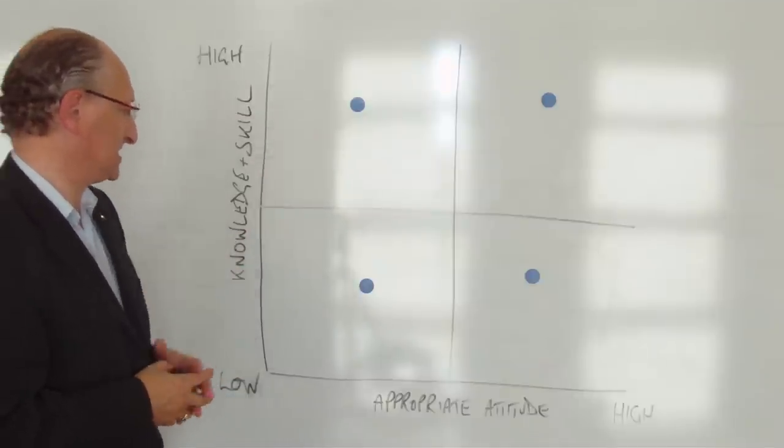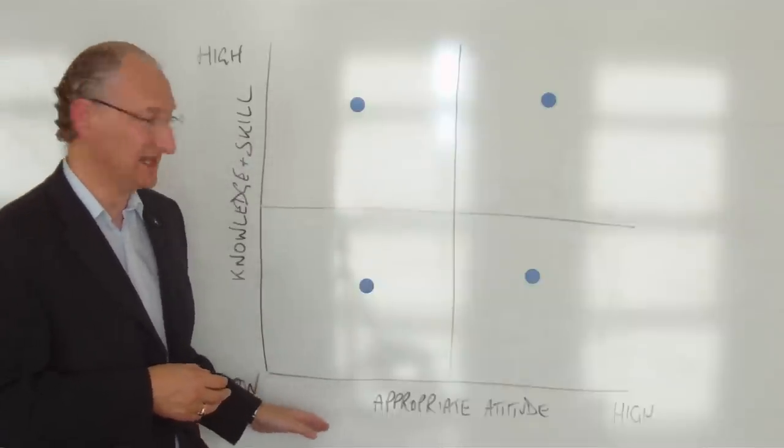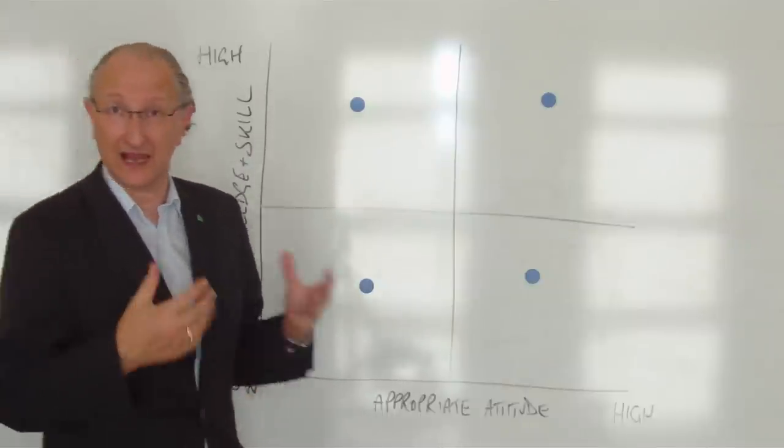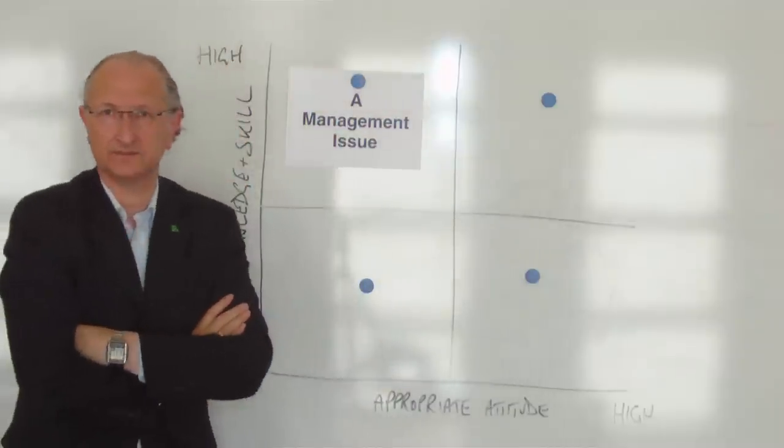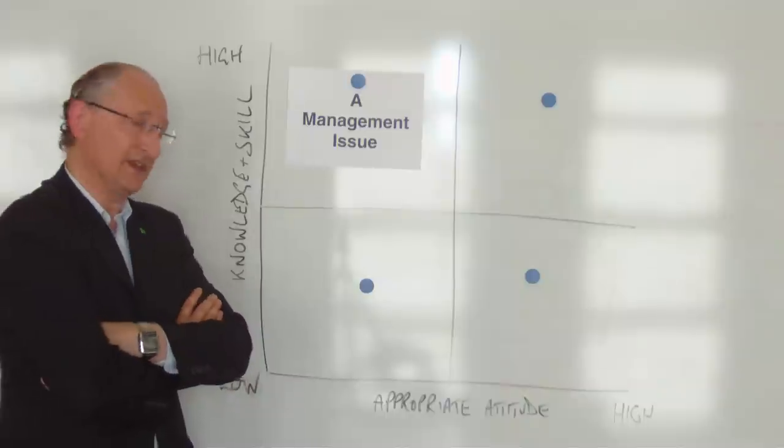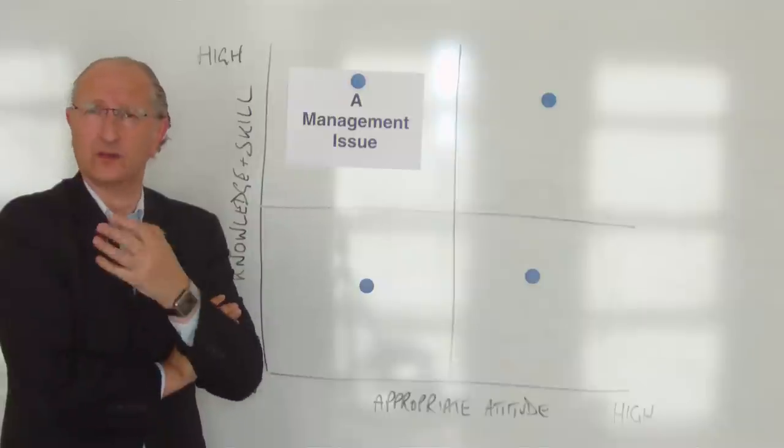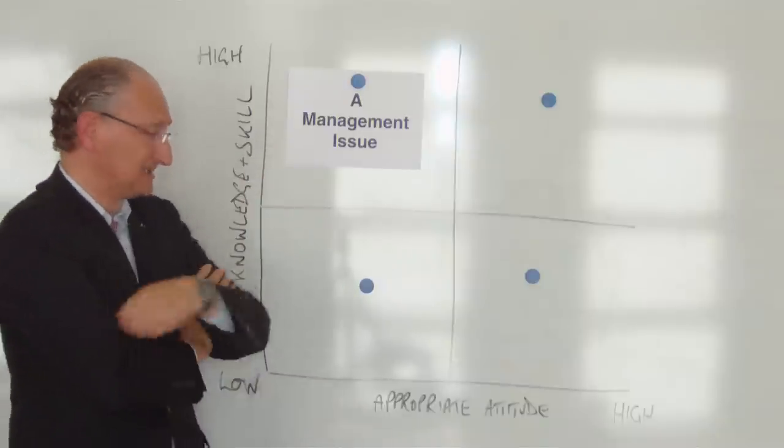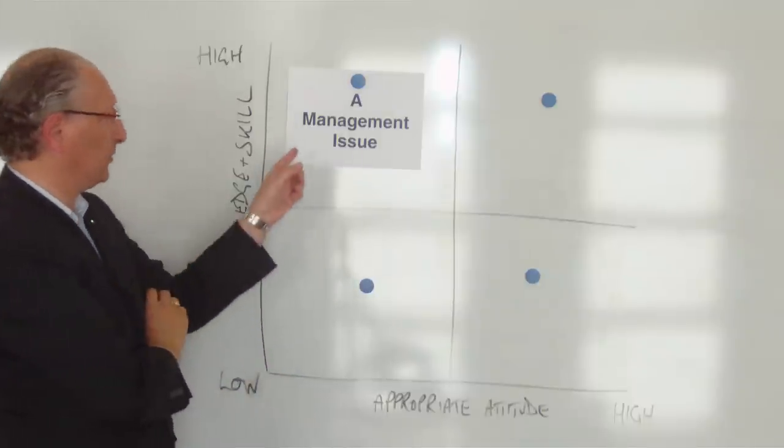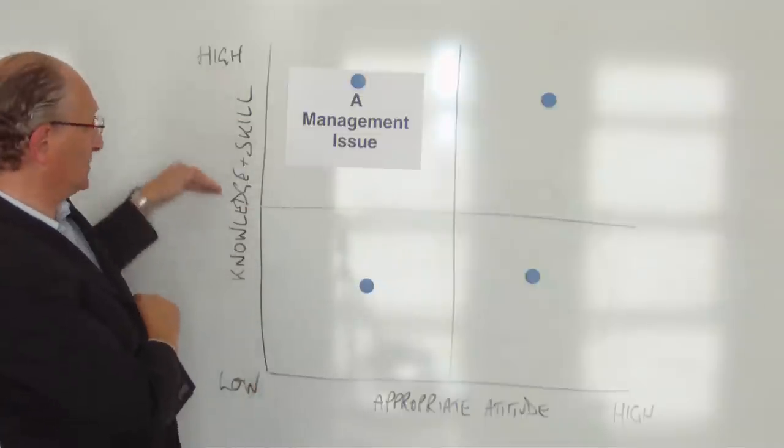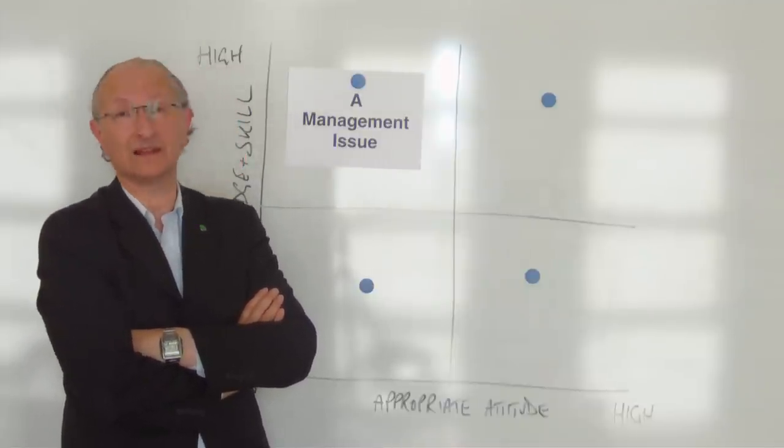Somebody who has high knowledge and skill but does not have the appropriate attitude—in other words, they're highly skilled, they've got high ability but they don't seem to care—well, the issue there would be, I think, not a developmental training one. It would actually be a management issue. That would be something that the management of this person would need to explore and find out why that person is like that, what the challenges are, what the problems are that create this inappropriate or poor attitude to the work, and then see if that can be addressed. But if you just try to throw development and learning at this person who already has the appropriate knowledge and skill, you'd be throwing good money after bad. It's unlikely to have any impact.